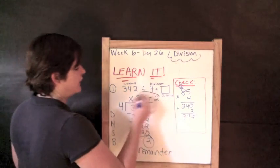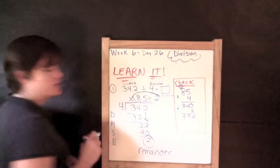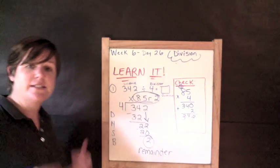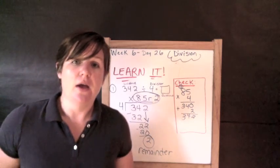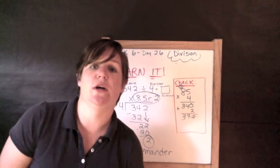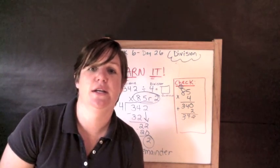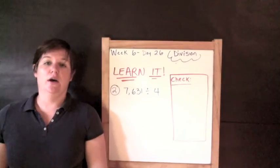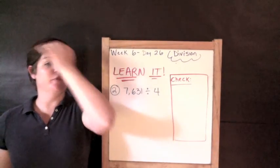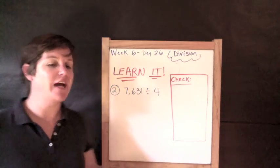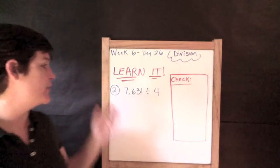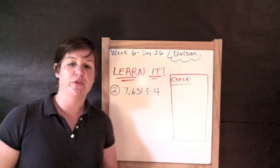85 times 4: 5 times 4 is 20, 4 times 8 is 32, plus 3 carried is 35 — so 340. Add the remainder of 2: 340 plus 2 gives you 342, which was our original dividend. So 85 remainder 2 is indeed the answer!